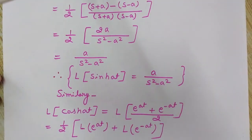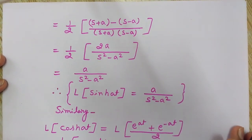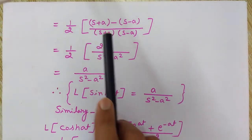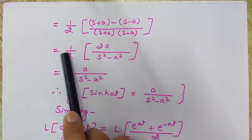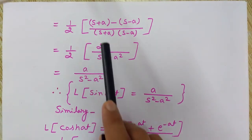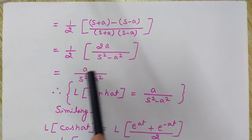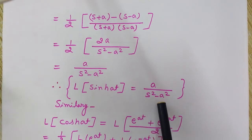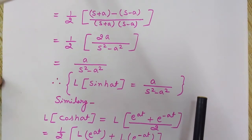Now we perform the simple mathematical operation. Taking the LCM of (s+a)(s-a) and solving, then canceling terms, we get the Laplace transform of sinh(at) as a divided by s squared minus a squared.